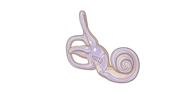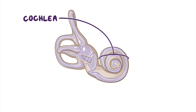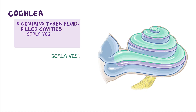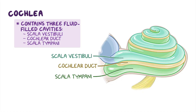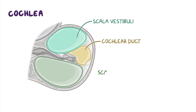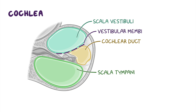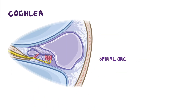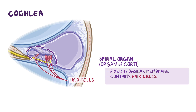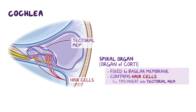Now let's switch gears and look at the structures responsible for hearing, starting with the cochlea. The cochlea is a bony tube that spirals on itself, resembling the shape of a snail shell, and contains three fluid-filled cavities called the scala vestibuli, the cochlear duct, and the scala tympani. The cochlear duct is between the scala vestibuli and the scala tympani; its roof is formed by the vestibular membrane, while the floor is formed by the basilar membrane. The organ of hearing, called the spiral organ or the organ of Corti, is fixed to the basilar membrane and contains hair cells. The tips of these hair cells insert into the tectorial membrane, which is a gelatinous membrane that overlies the spiral organ.